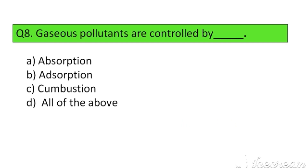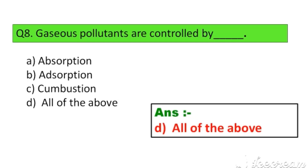Question number 8. Gaseous pollution are controlled by: Option A. Absorption, B. Absorption, C. Combustion, D. All of the above. The right answer is Option D: All of the above.